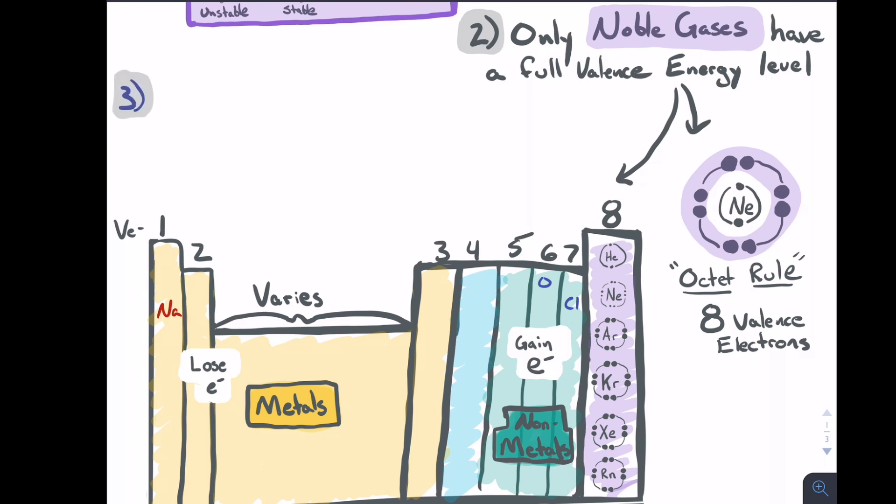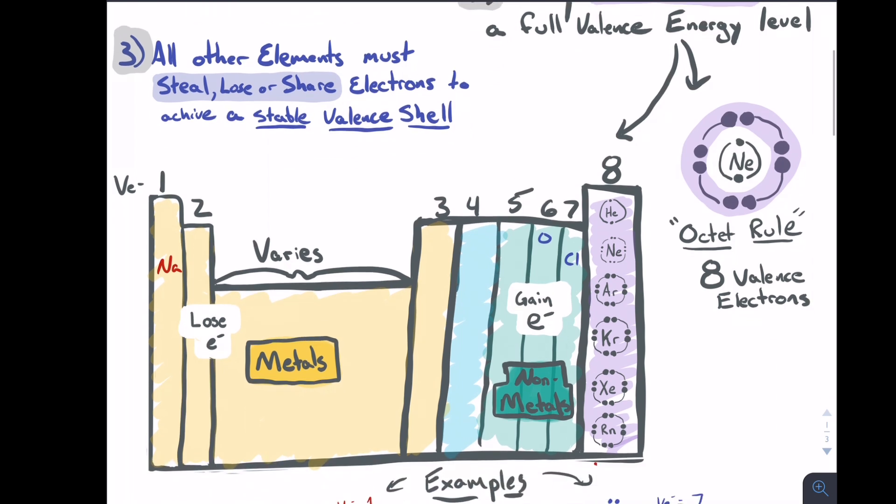All right, well what about for the other elements? Well, all other elements must steal, lose, or share electrons in order to have that stable valence shell of eight electrons. So let's take a look at a couple examples.